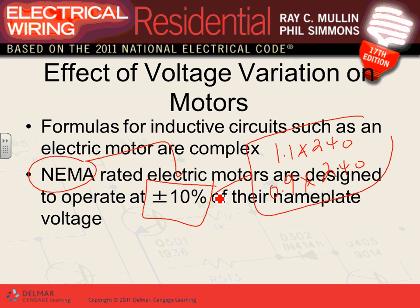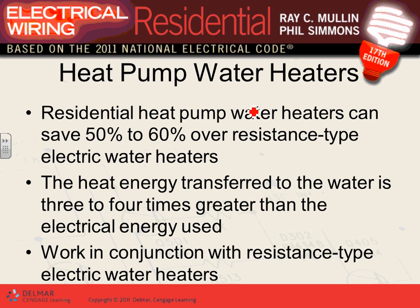For inductive circuits like motors, increasing or decreasing voltage substantially will burn the equipment in both cases. For resistive loads like water heaters, decreasing voltage just means you don't get heat — the water heater isn't damaged. A motor with voltage cut in half will burn; a motor with doubled voltage will also burn.